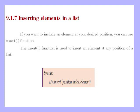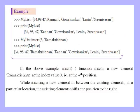Here we will see an example. We define mylist with 3 integer numbers and 4 string elements: mylist = [34, 98, 47, 'Kannan', 'Gaurishankar', 'Lenin', 'Shrinivasan']. We will print everything using print(mylist).